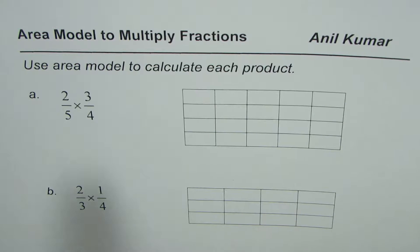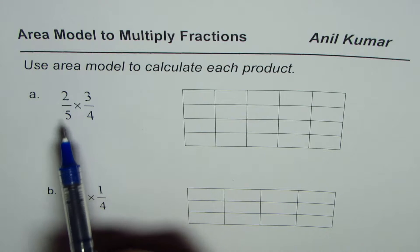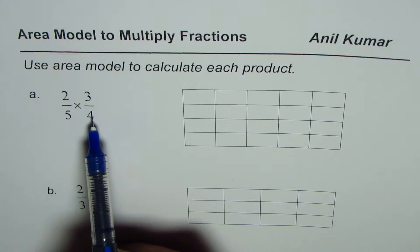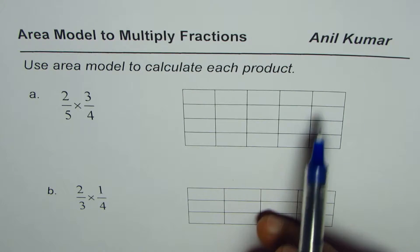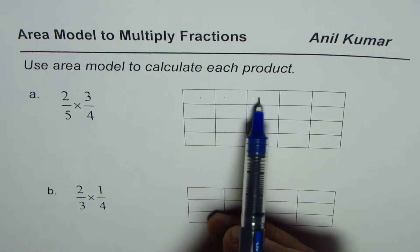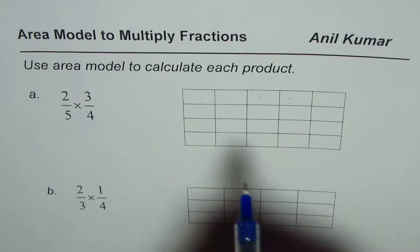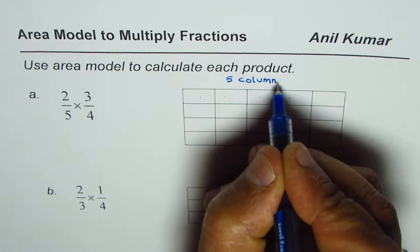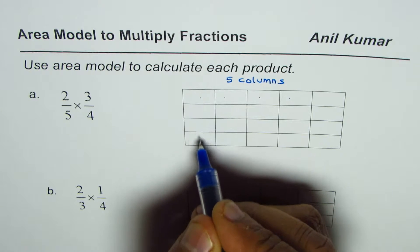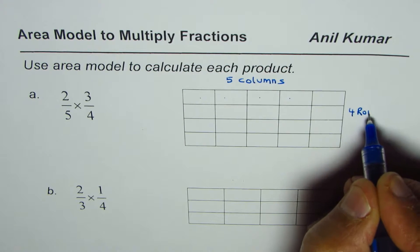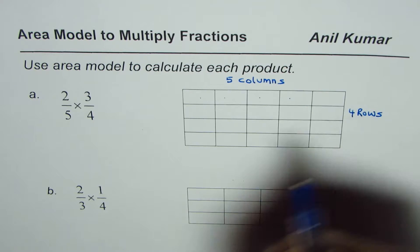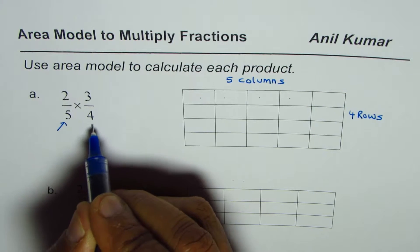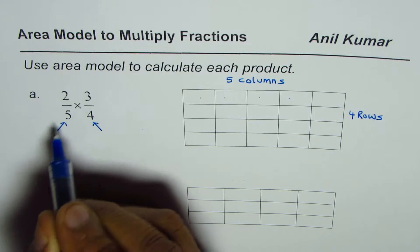You can copy and answer these questions. As you can see we have given you rectangles already. So we need to multiply two over five times three over four. The rectangle here has one, two, three, four, five columns, so we have five columns and one, two, three, four, four rows.